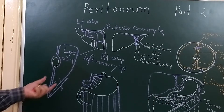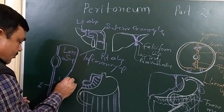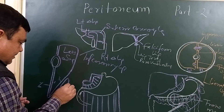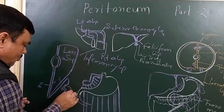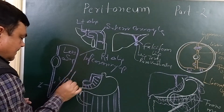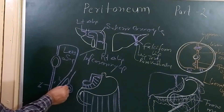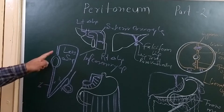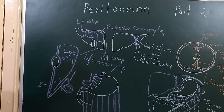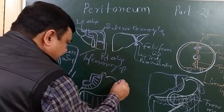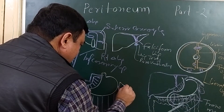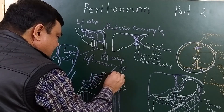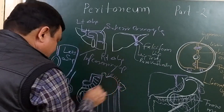These four layers are fused. The fourth layer continues with the transverse colon. Here is the position of the transverse colon, and this is the transverse mesocolon. So this is the greater omentum, this is the lesser omentum. Here is the position of the spleen. This is the gastrosplenic ligament in relation to the diaphragm.